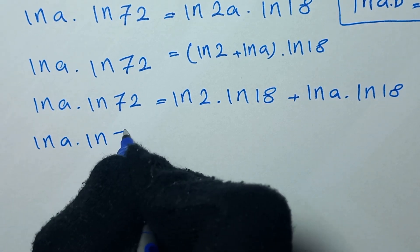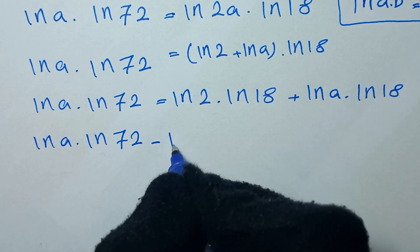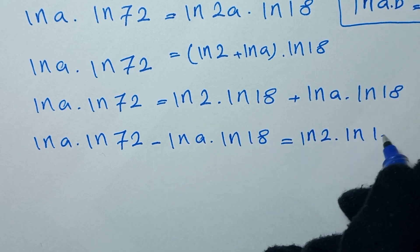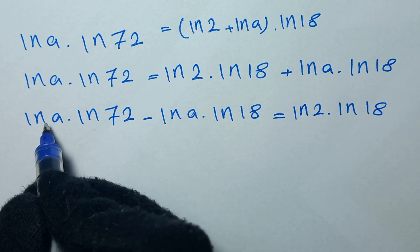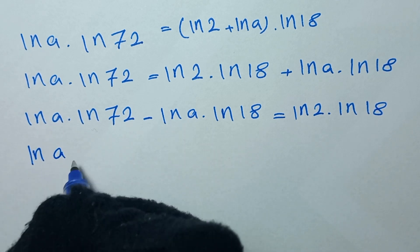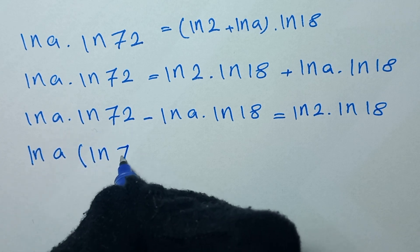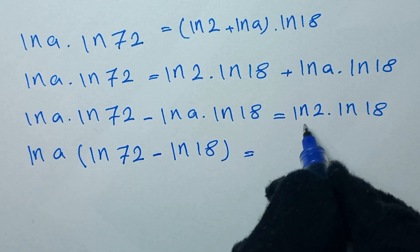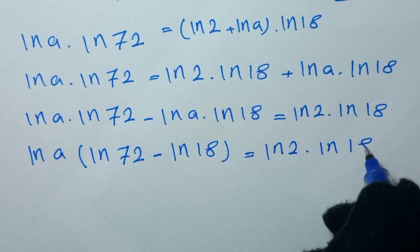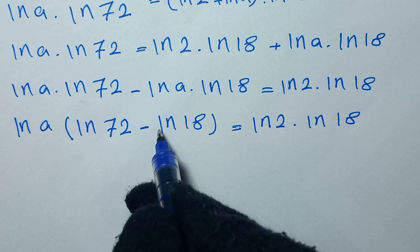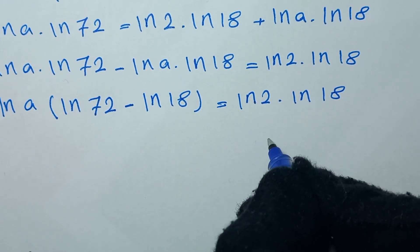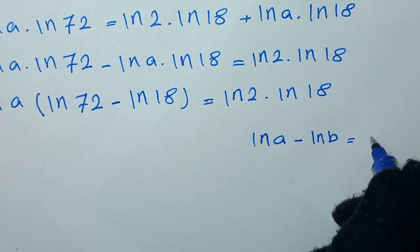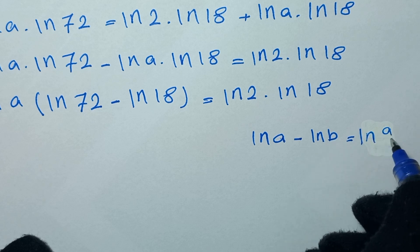Moving ln of a times ln of 18 to the left side: ln of a times ln of 72 minus ln of a times ln of 18 is equal to ln of 2 times ln of 18. Here ln of a is common, so we factor it out. We get ln of a times (ln of 72 minus ln of 18) equals ln of 2 times ln of 18. From log rules, ln of a minus ln of b equals ln of a over b.